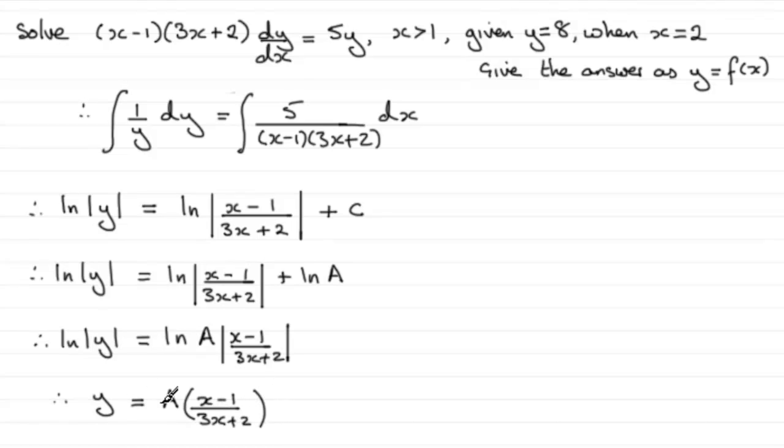All I need to do now is just work out what that constant is, and I can do that with my boundary conditions. You can see that when x is 2, y equals 8. So therefore, 8 = A(2-1)/(3·2+2).